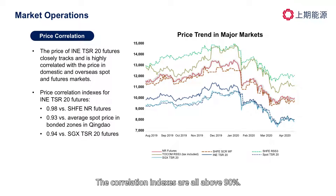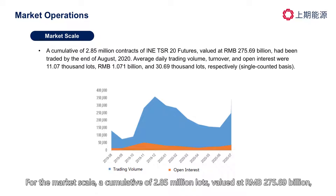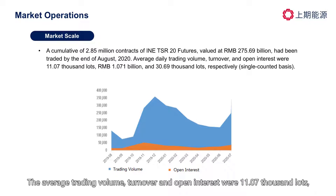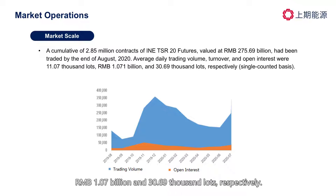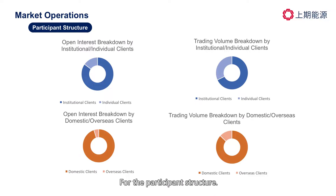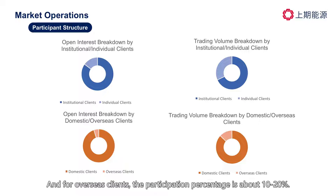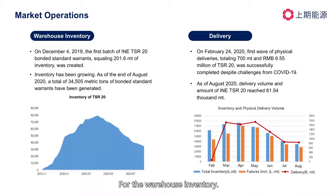The correlation indexes are all above 90%. For the market scale, a cumulative 2.85 million lots, valued at RMB 275.69 billion, had been traded by the end of August 2020. The average trading volume, turnover, and open interest were 11.07 thousand lots, RMB 1.07 billion, and 30.69 thousand lots respectively. For the participant structure, institutional clients occupied a market share of 60 to 70%, and overseas clients represented about 10 to 20%.